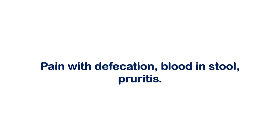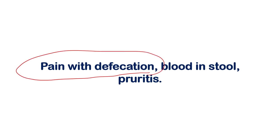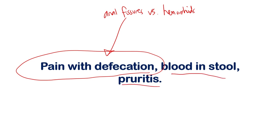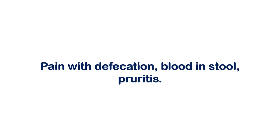Now let's look at symptoms. The most important thing to remember is pain with defecation. Anal fissures are often confused with hemorrhoids. You can see blood in the stool and itching in both conditions, but pain with defecation is more characteristic of anal fissures. So if a test question says the patient has pain with defecation and a history of constipation, lean toward anal fissures over hemorrhoids.